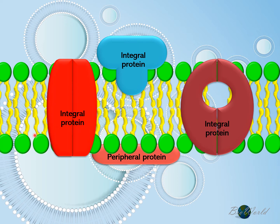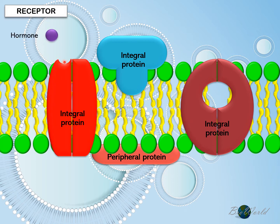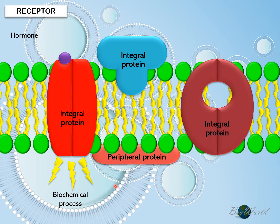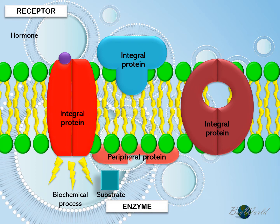Now we'll discuss the role of proteins. Some proteins can function as hormone receptors. So target cells with hormone receptors will have integral proteins with an active site complementary to the structure of the hormone. When the hormone attaches to the receptor, it will trigger a biochemical process to occur within the target cell. Proteins can also function as enzymes. Peripheral proteins facing the cytoplasm may have active sites that are complementary to the structure of the substrate. When the substrate attaches to the active site, a biochemical process occurs causing products to form.